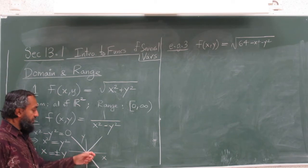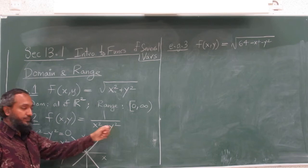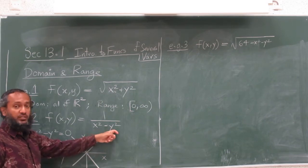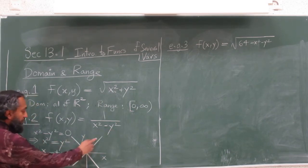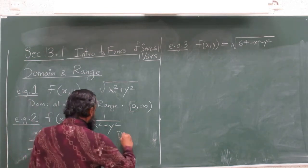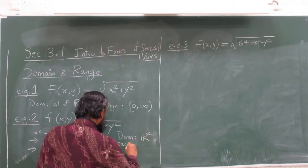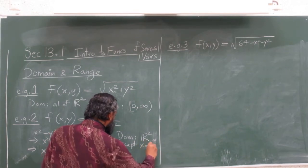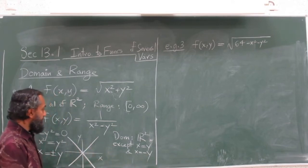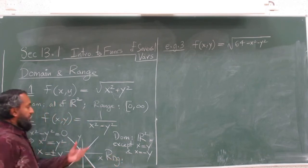Any point on these lines cannot be plugged in. For example, you cannot plug in (3, 3) or (3, -3) — negative three, three will give you zero as well. So none of these points are in the domain. The domain is R² except x equals y and x equals negative y.